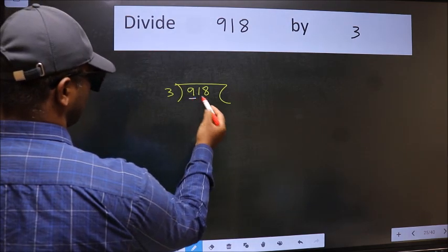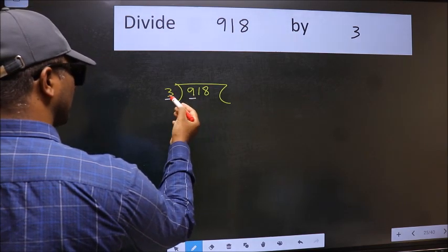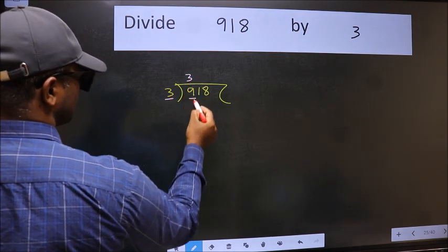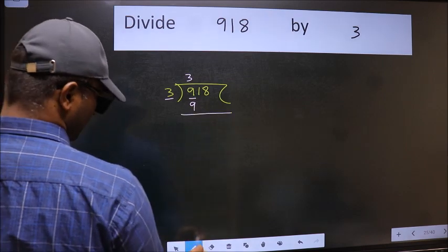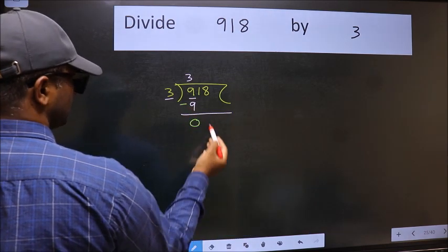Here we have 9 and here 3. When do we get 9 in the 3 table? 3 times 3 is 9. Now we should subtract. We get 0.